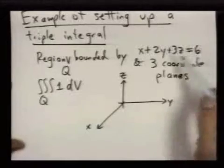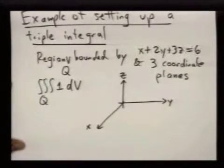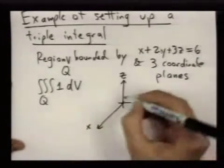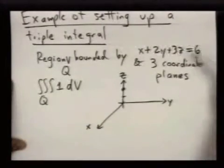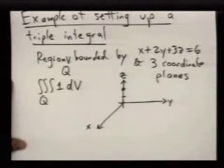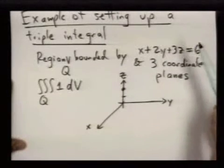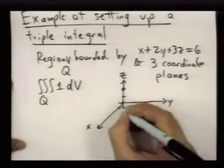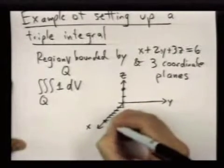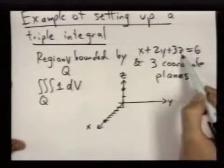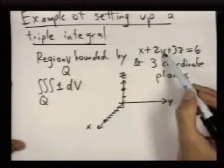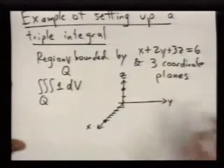So when x and y are 0, z is equal to 2. So we have this point on there. So right now I'm just trying to sketch this plane. When y and z are equal to 0, x is 6. And when x and z are 0, y is equal to 3.